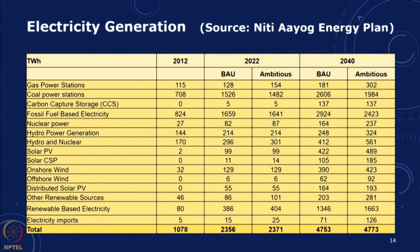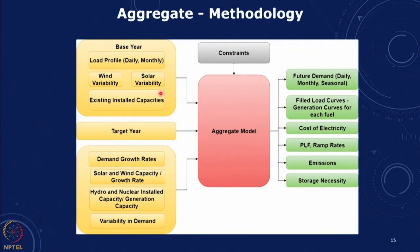We took projections from Niti Aayog as part of its energy plan — a projection for 2040 with a business as usual scenario and an ambitious scenario with significant renewables. We made a simple aggregate model using the base year data on load profiles, wind variability at different hours of the day and different seasons, solar insolation, and existing installed capacities by category: coal, hydro, solar, and wind.